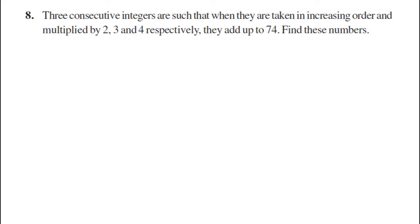Now here they are saying that three consecutive integers are such that when they are taken in increasing order and multiplied by 2, 3 and 4 respectively, they add up to 74. Find these numbers. Three consecutive integers.